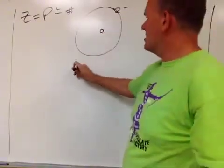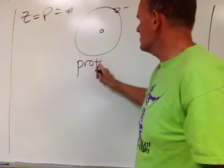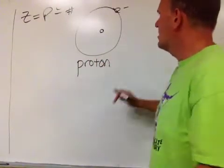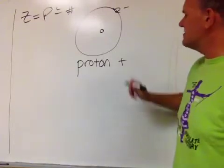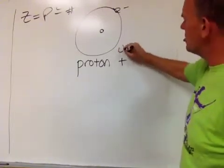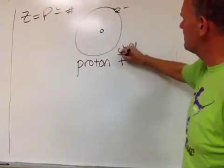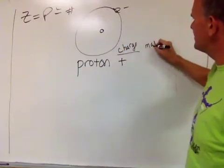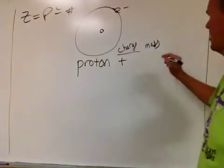The first thing is called a proton and the protons have a positive charge. Their charge is positive and they also have a mass. The mass is one.